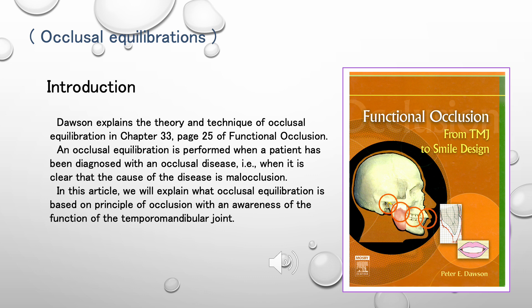Dawson explains the theory and technique of occlusal equilibration in Chapter 33, Page 25 of Functional Occlusion. An occlusal equilibration is performed when a patient has been diagnosed with an occlusal disease — that is, when it is clear that the cause of the disease is malocclusion. In this article, we will explain what occlusal equilibration is, based on the principle of occlusion with an awareness of the function of the temporomandibular joint.